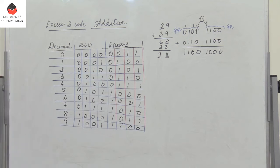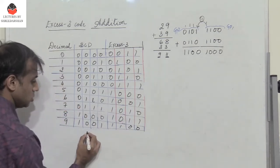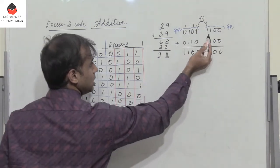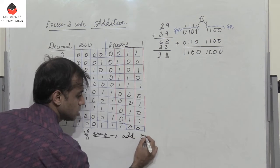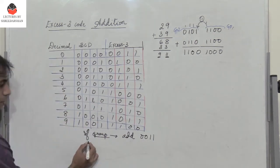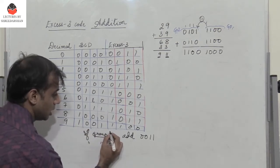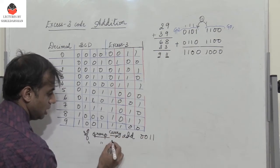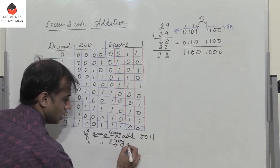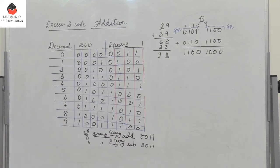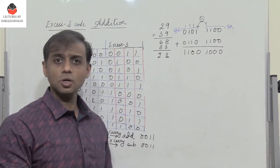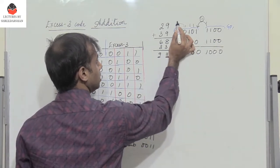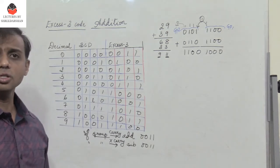So now what are the rules? If a group generates a carry to the next stage, then we add 3, which is 0011. If a group does not generate a carry, then we subtract 0011 — we subtract 3. So very easy to remember: if it generates a carry, you add 3; if it does not generate a carry, you subtract 3.